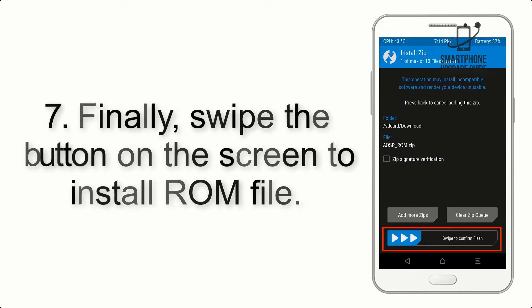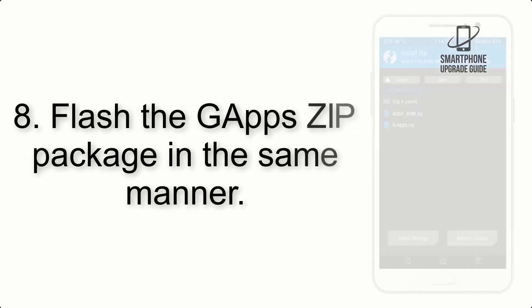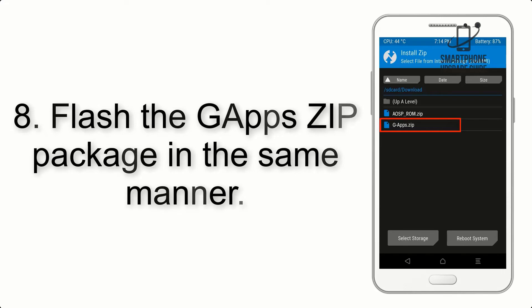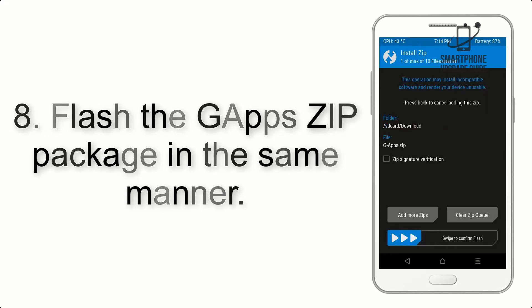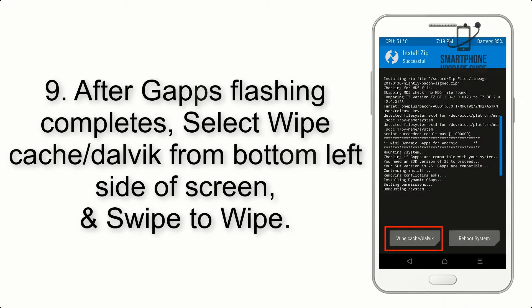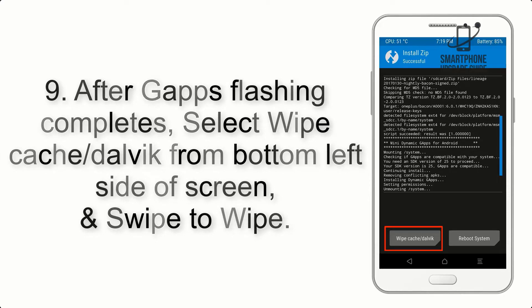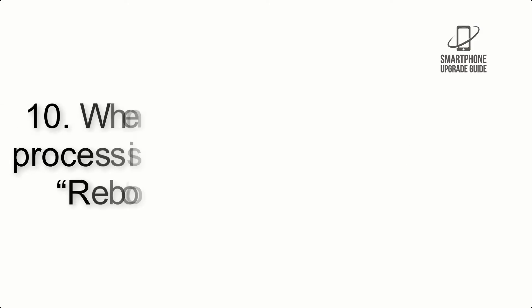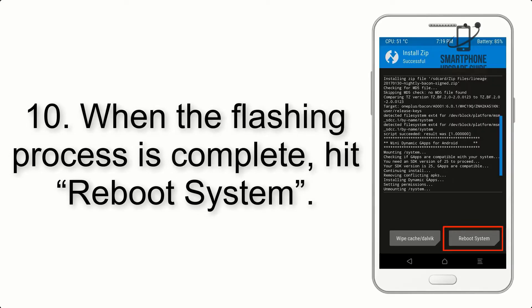Step 7: Swipe the button on the screen to install the ROM file. Step 8: Flash the GApps zip package in the same manner. Step 9: After GApps flashing completes, select Wipe Cache and Dalvik from the bottom left side of the screen and swipe to wipe.